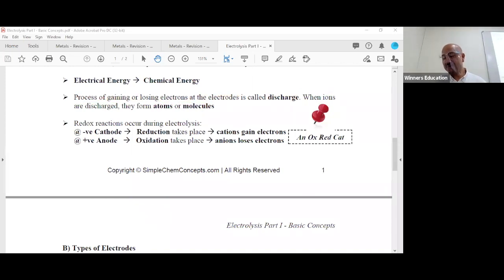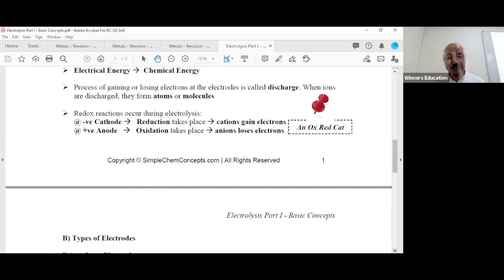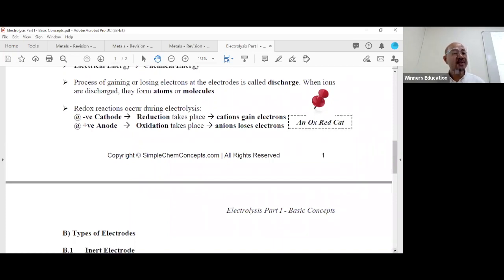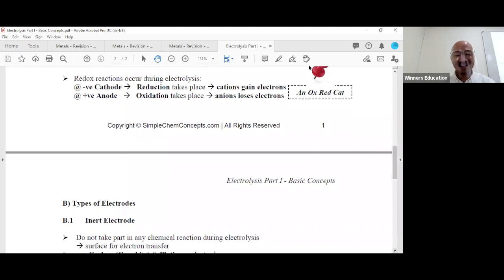When ions are discharged, they always form products. You always have this as a product: it's either atoms, if not molecules, and nothing else. Whatever I'm going to say here represents the whole topic. I emphasize again: whatever I'm going to say here represents the whole topic.